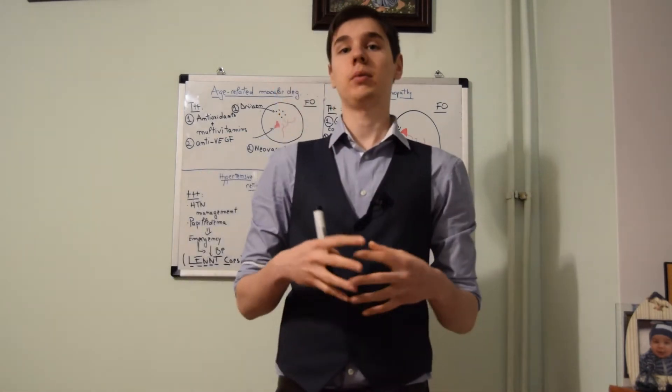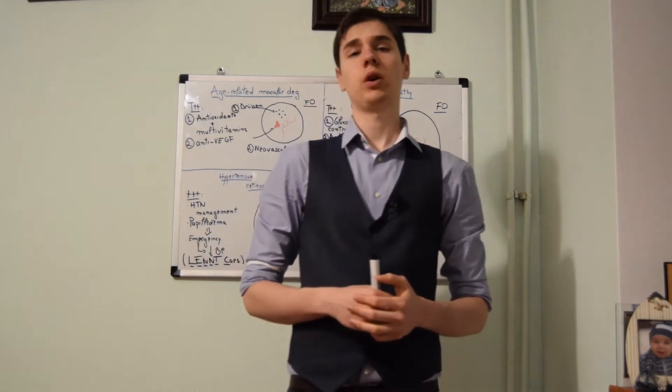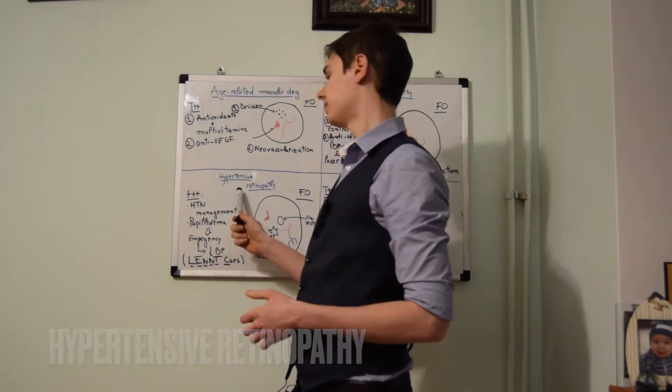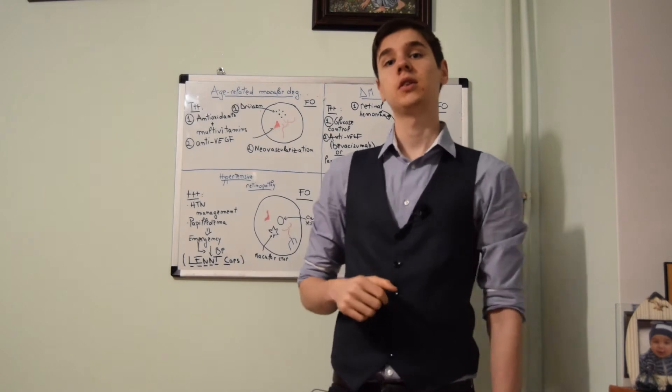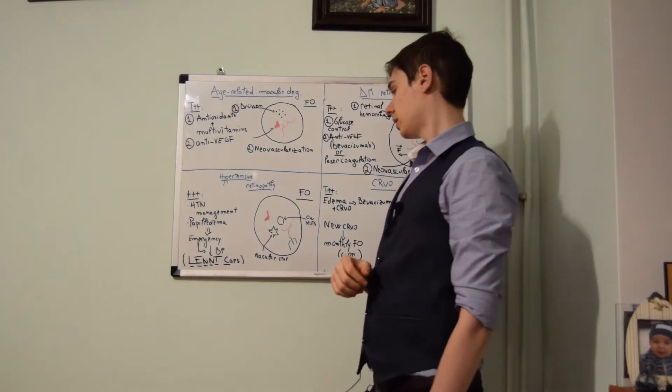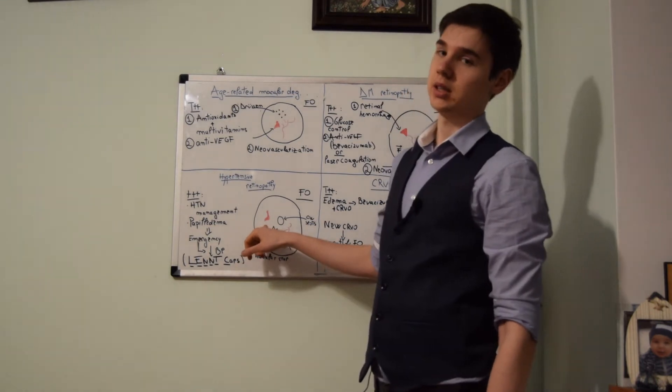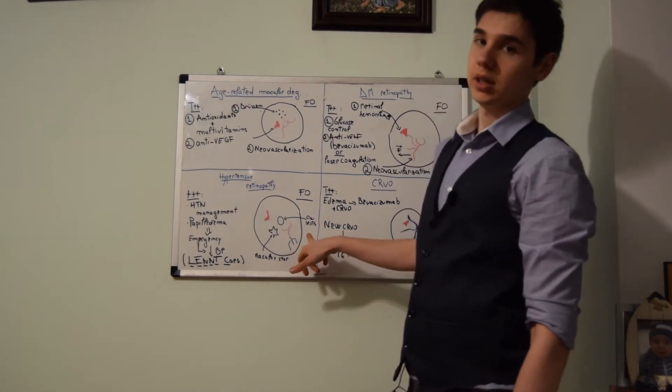The next type of fundoscopic images that we can find on USMLE is the one that corresponds to hypertensive retinopathy. There are four critical findings in hypertensive retinopathy. Firstly, there are flame-shaped hemorrhages on the retina. Then, we can have cotton wool spots on the retina.